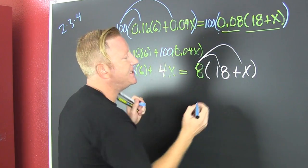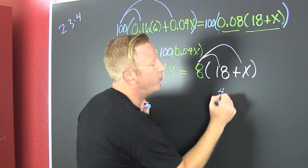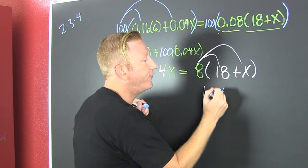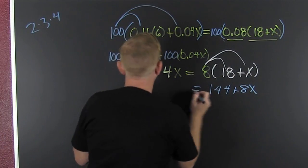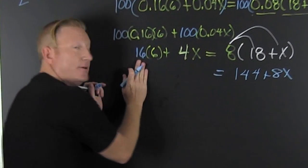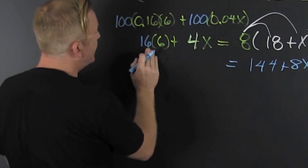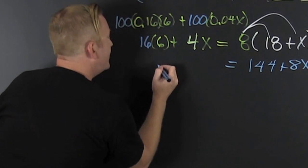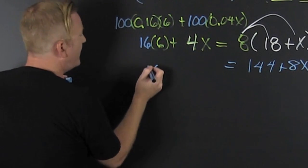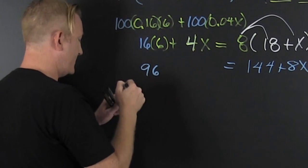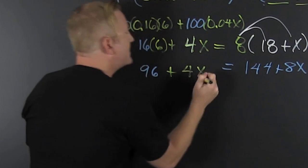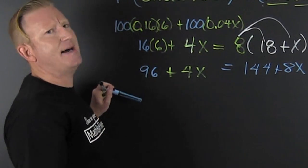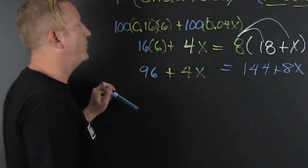Now I want to distribute over here. And 8 times 18, 6 times 8 ends in a 4, carry the 3, is 144 plus 8x. All right, and then over here, let's deal with this. 16 times 6, that's 6 times 6 is 36, and then I carry a 3. So then that's 96, and then I'm just gonna bring down that 4x, plus 4x.